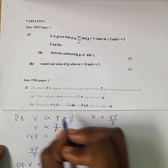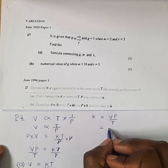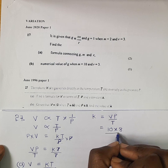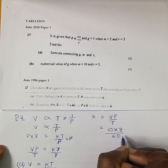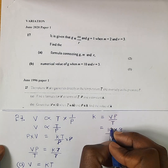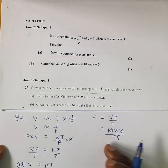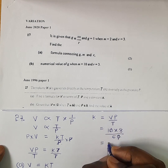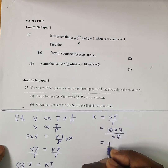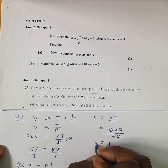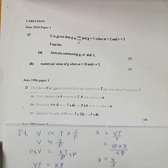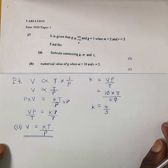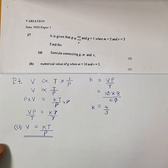Part B requires us to find the value of K. We have K equals VP over T. The value of V is given as 10, P is given as 8, and T is 60. Simplifying: the zeros cancel giving 8 over 6, which reduces to 4 over 3. So the value of K equals 4 over 3. By doing this, you obtain the second mark on June 1996, question number 27.